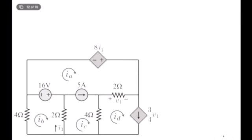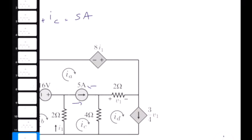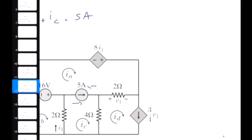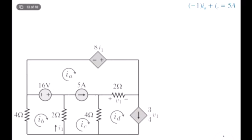Let's start writing the linear system of equations. We'll begin with the super mesh, but before writing the KVL for it, let's write a relation between iA and iC using this current source. iA is going in this direction and iC is in this direction, so we can clearly see that minus iA plus iC equals 5A. This is our first equation.